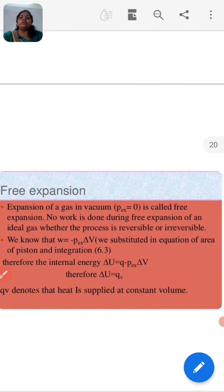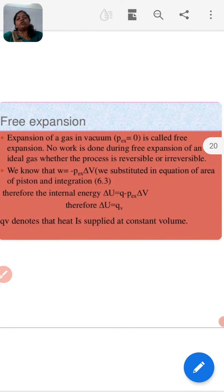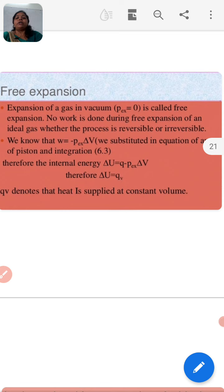Now, next is free expansion. Expansion of a gas in vacuum is called free expansion. If we want to understand expansion of gas, then in vacuum p_ex equals zero, so no work is done during free expansion of an ideal gas whether the process is reversible or irreversible. For ideal gas in free expansion, no work is done, and this process can be both reversible or irreversible.